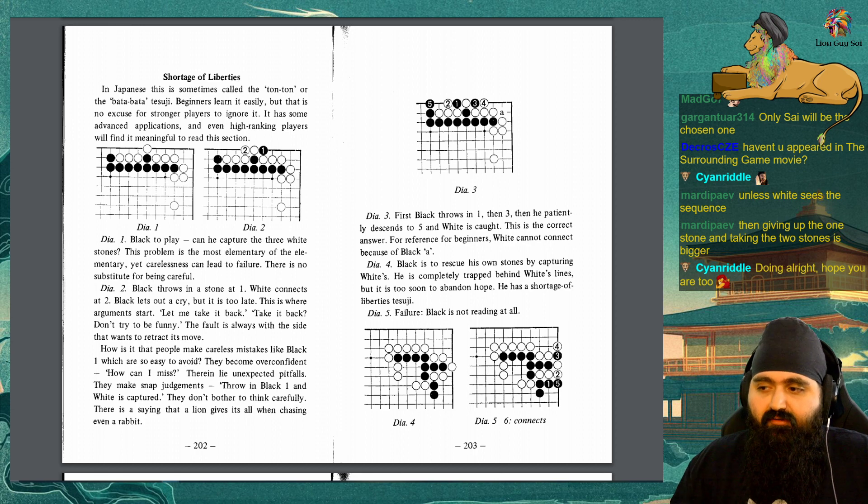Diagram 1: Black to play. Can he capture the 3 white stones? This problem is the most elementary of the elementary, yet carelessness can lead to failure. There is no substitute for being careful. Diagram 2: Black throws in a stone at 1. White connects at 2. Black lets out a cry, but it is too late. This is where the arguments start. Let me take it back. Take it back? Don't try to be funny. The fault is always with the side that wants to retract its move. How is it that people make careless mistakes like black 1, which are so easy to avoid? They become overconfident: how can I miss? Therein lie unexpected pitfalls. They make snap judgments: throw in black 1 and white is captured. They don't bother to think carefully. There is a saying that a lion gives its all when chasing even a rabbit.